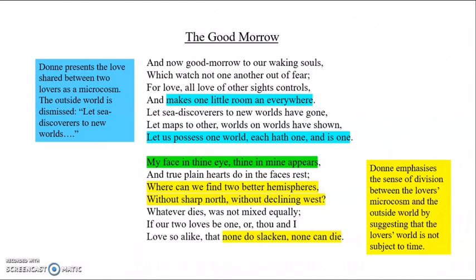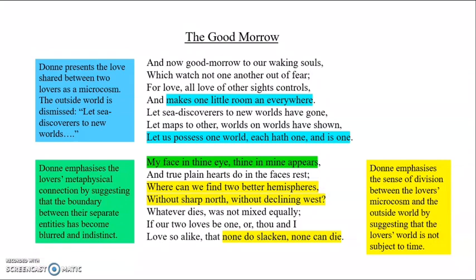Finally, Donne emphasises the sense of a metaphysical connection between the lovers by blurring the distinction between their separate entities. He writes, 'my face in thine eye, thine and mine appears,' which serves to blur the distinction between their bodies — blur the boundaries between them — reinforced by the rhyme 'thine and mine.' This serves to reinforce the sense of a metaphysical connection that transcends flesh and physical parameters.